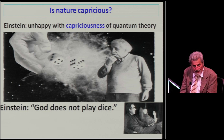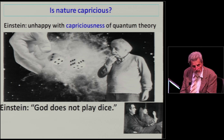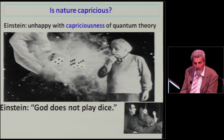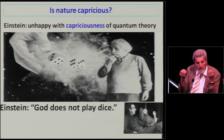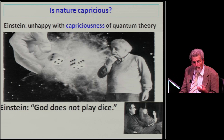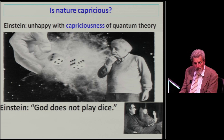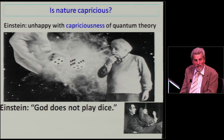The first thing we can think about in quantum mechanics is the fact that it indicates that nature behaves in a capricious, seemingly capricious way. If we have two atoms that are completely identical, and one of them decays after one minute and the other for no reason at all decays after one hour - this looks unbelievable.